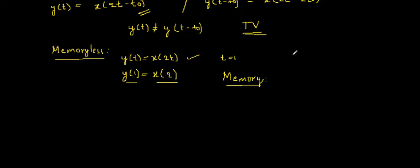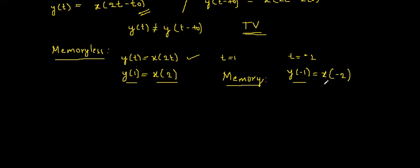Taking another example: at t = −1, y(−1) = x(−2). Here y(−1) is the current output, but to find it I need to know x(−2), which is a past input. So in this case the output depends on a past input. Hence the system possesses memory.